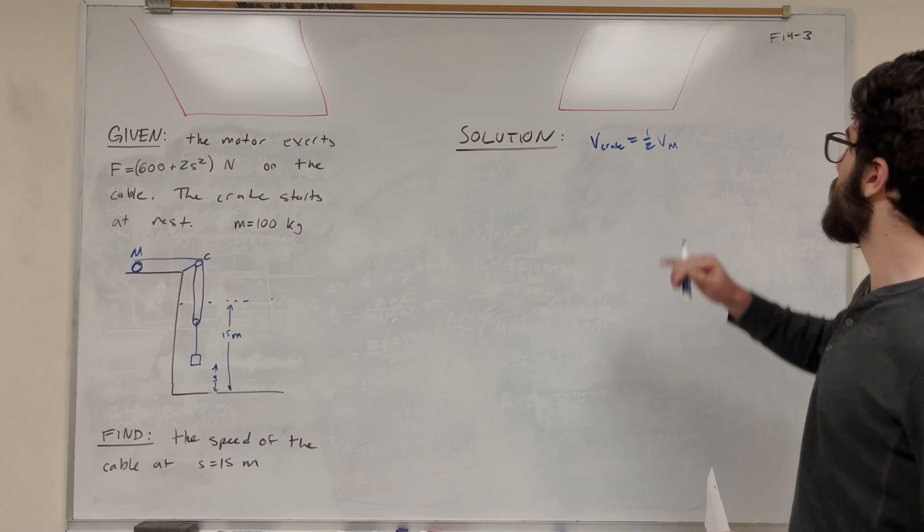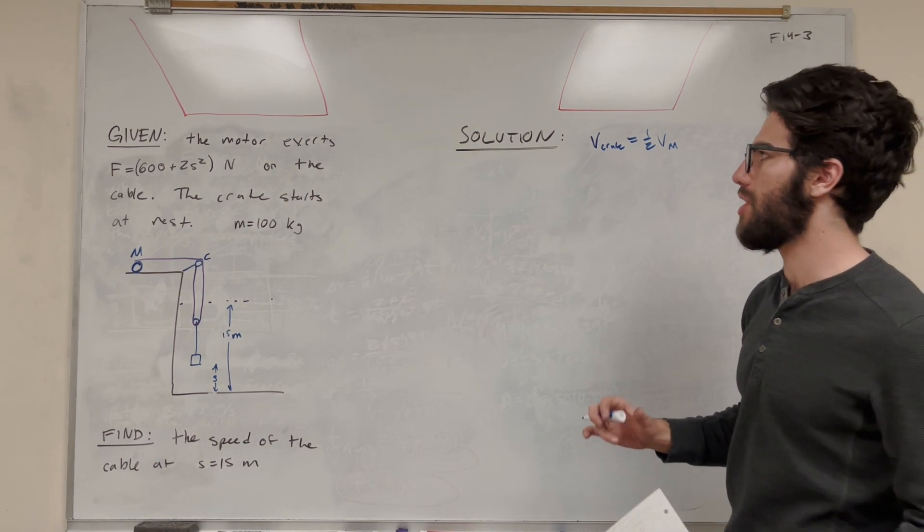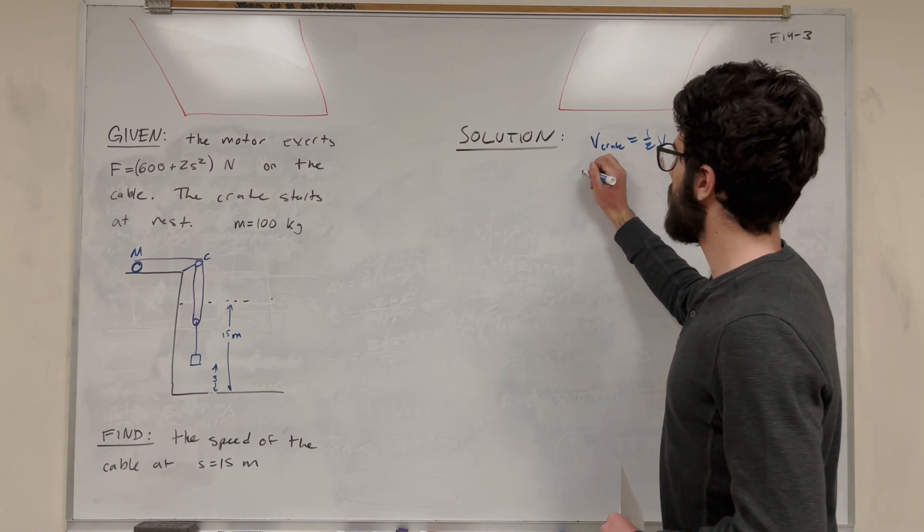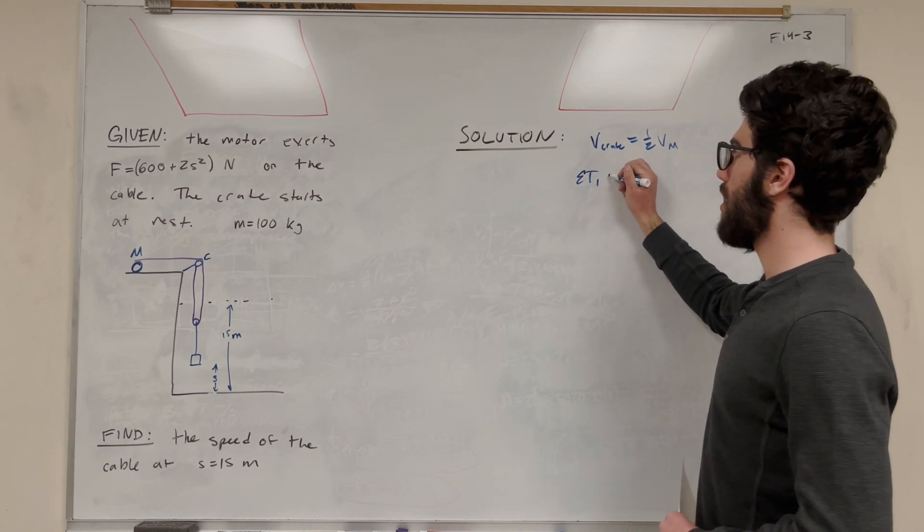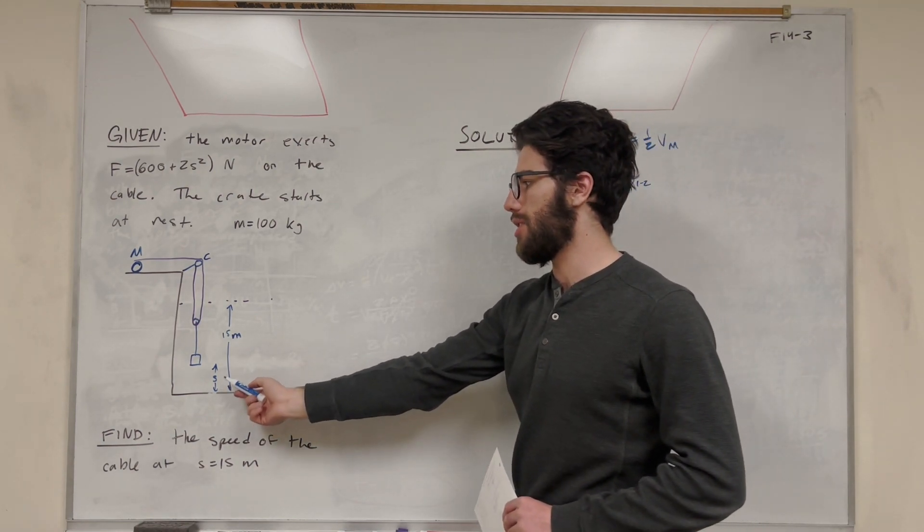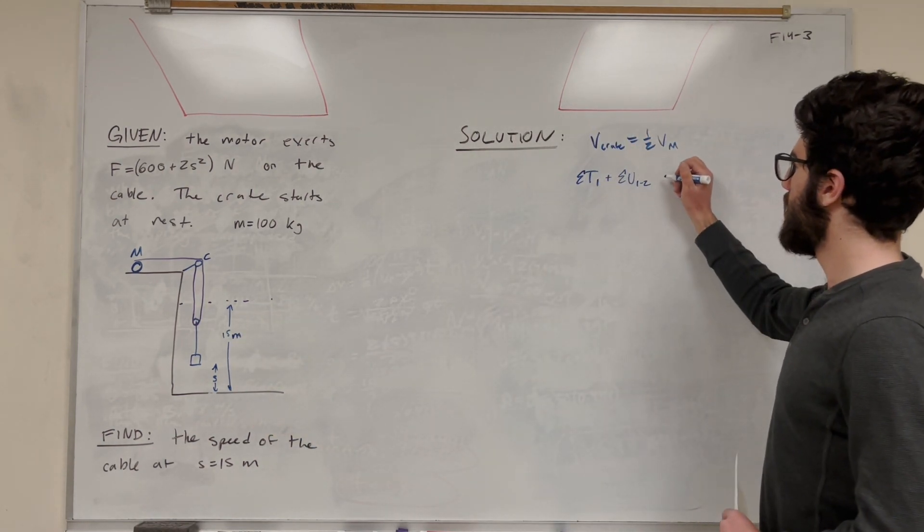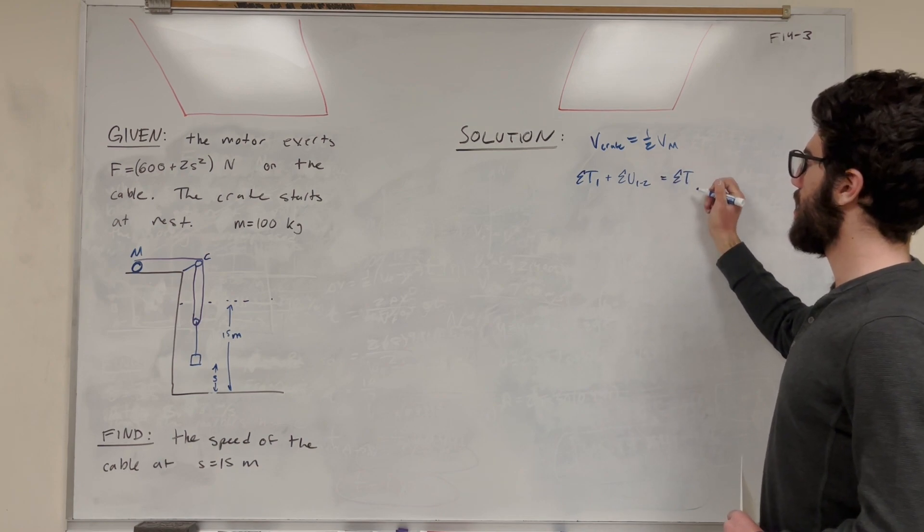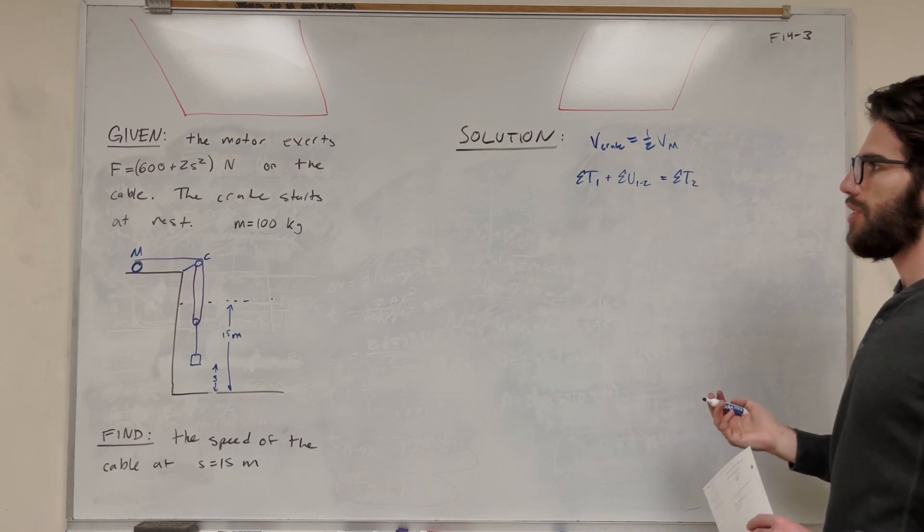So what equation are we going to use? Well, we're in Chapter 14, so we're using work and energy and all sorts of stuff. So the equation is the sum of the energies of the initial, T1, plus the sum of the changes in energy from 1 to 2, which is going to be from S is equal to 0 to S is equal to 15, as you go to the final energies. So let's run through each one of these.